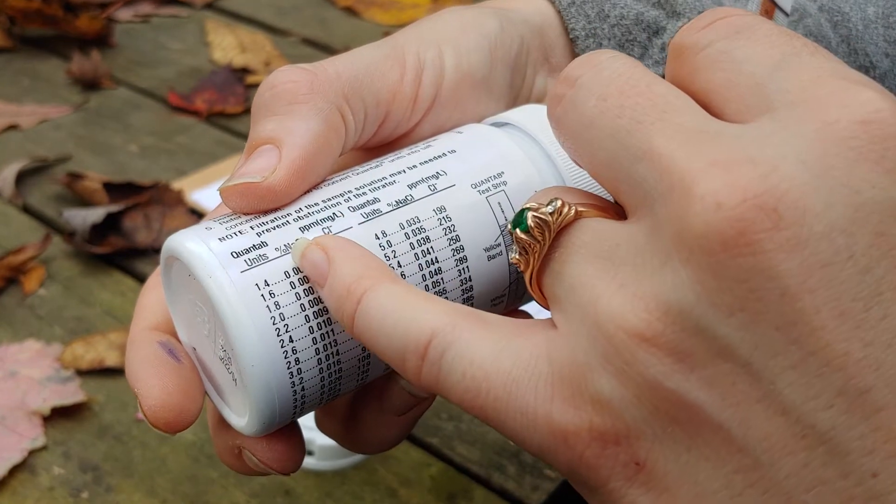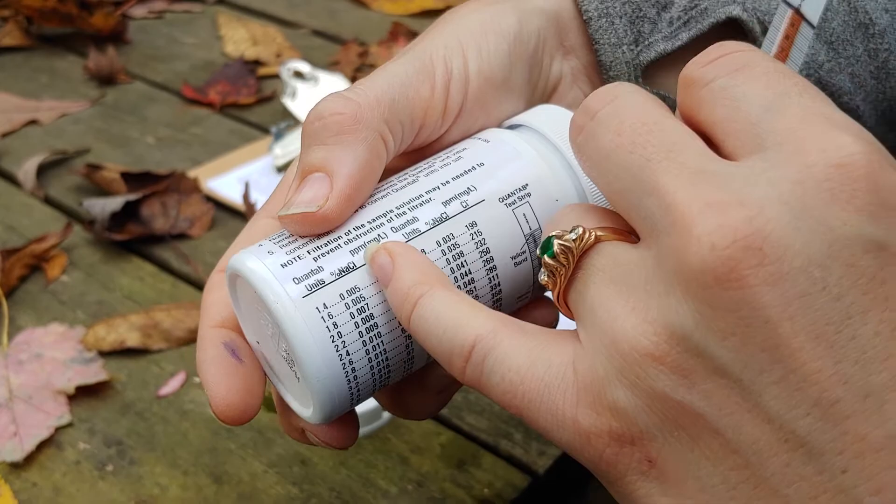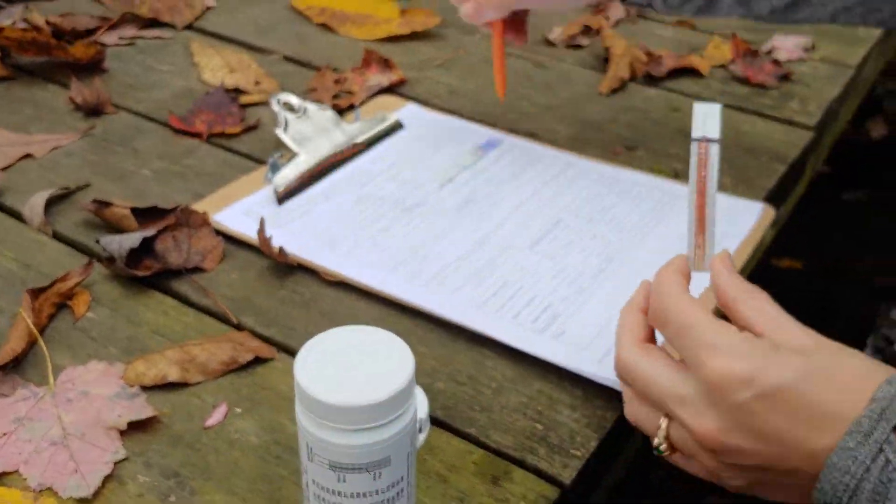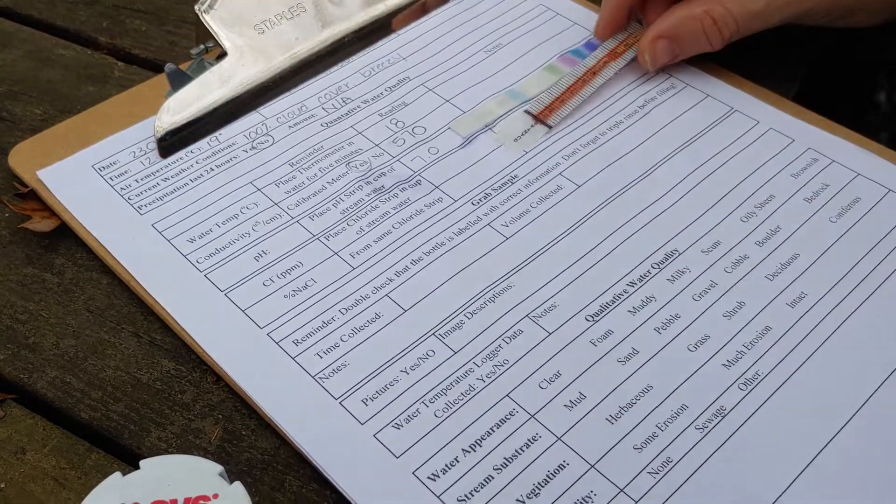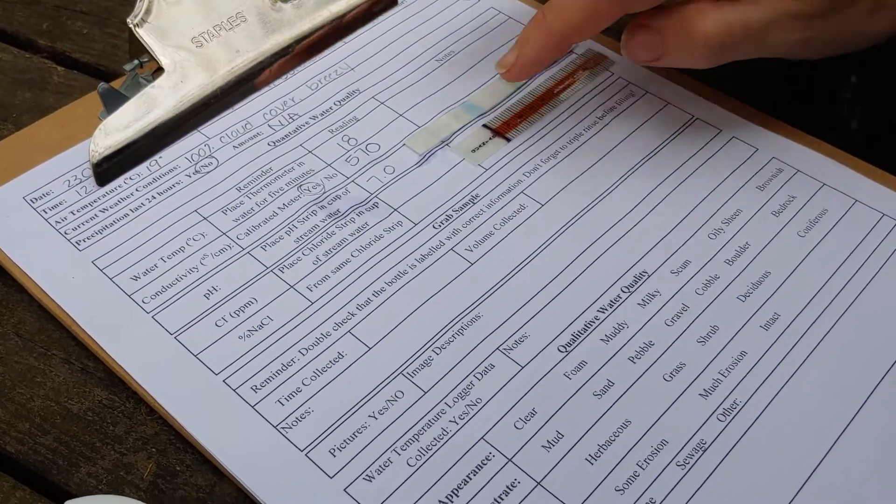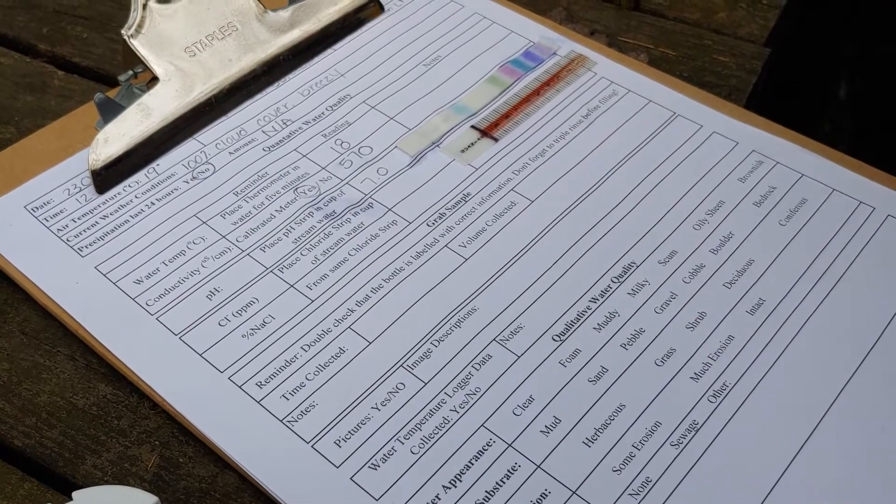So we're going to write down those two numbers - the percent NaCl and the parts per million chloride ions - onto our data sheet, and then we're going to tape our strip to our sheet so we can refer back to it when we need to.